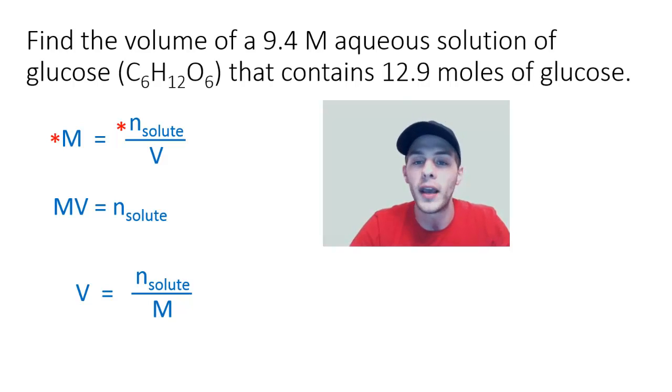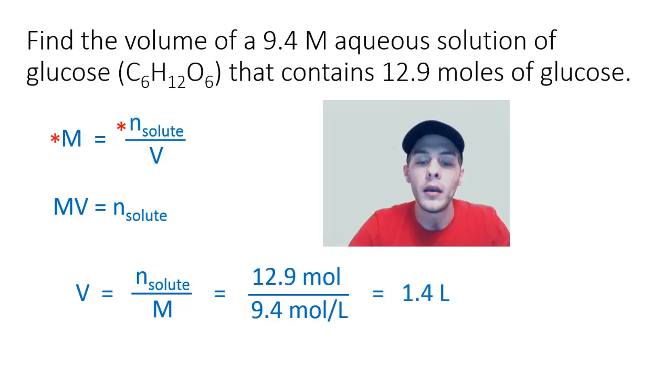At this point, all we have to do is just plug the values that we've been given for the amount of solute and the molarity and then crunch those numbers into a calculator and we will be all done. So again, the amount of solute in moles, that's 12.9 moles divided by the molarity of the solution, that's 9.4 moles per liter. And the result is going to be 1.4 liters. So that is the volume of a 9.4 molar solution that contains 12.9 moles of glucose.